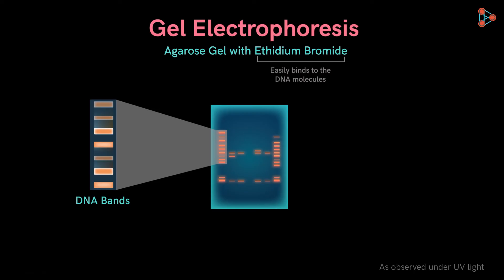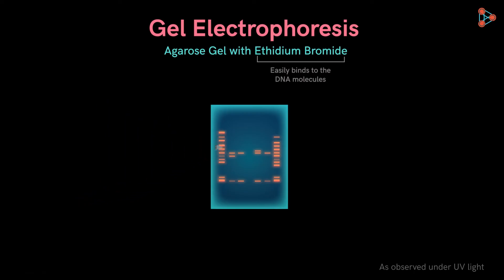The separation has been successful based on the size of the DNA fragments. The larger molecules are the ones found here, which means these are the ones that moved slowly. On the other hand, the smaller molecules which moved faster are the ones spotted here.